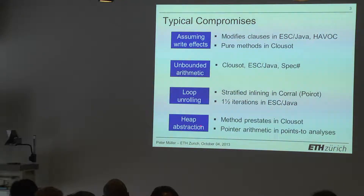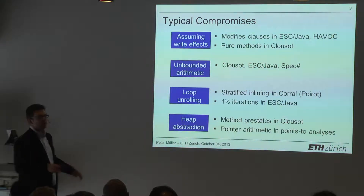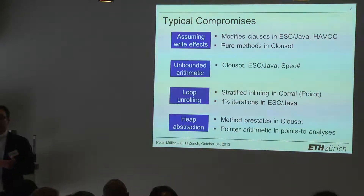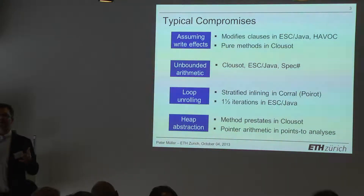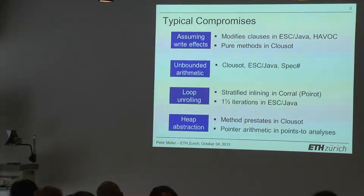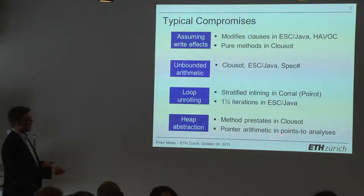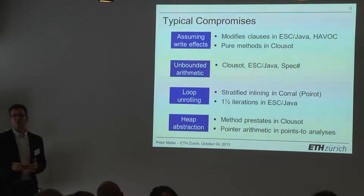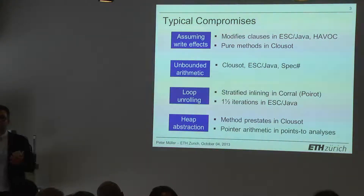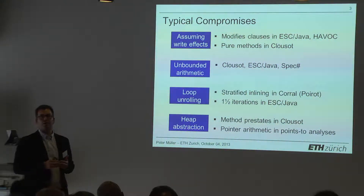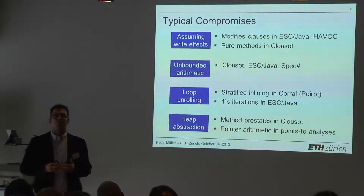Many tools also use unsound heap abstractions. For instance, the Clouseau checker assumes that whenever you look at the input state of a method, each argument points to a disjoint memory region — so there's no aliasing between the arguments. Some points-to analyses assume there's no pointer arithmetic, and so on. People also ignore exceptional control flow and reflection. There are many properties that people decide not to handle soundly in order to optimize other qualities.